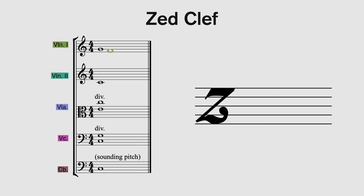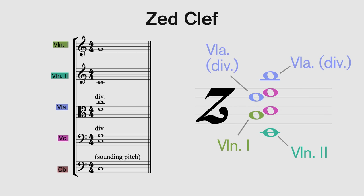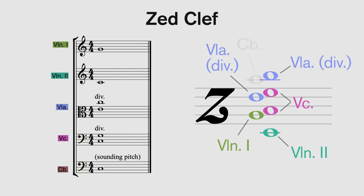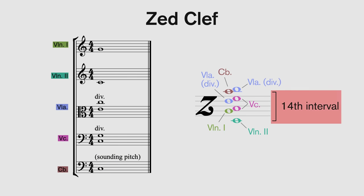To use the Z-clef, simply transfer the notes where they fall in their common or default clef to a new stave. Always use alto-clef for violas and bass-clef for cellos and basses when you plot the pitches on the Z-clef — this is essential. For the contrabass, which is a transposing instrument, the Z-clef always makes use of the written or transposed pitch, not the sounding or concert pitch. This is an important distinction, as the Z-clef's accuracy to predict balance breaks if the sounding pitch is used for the contrabass. There's a spread of a 14th interval from top to bottom, which greatly exceeds a sixth, so this voicing will sound quite unbalanced.